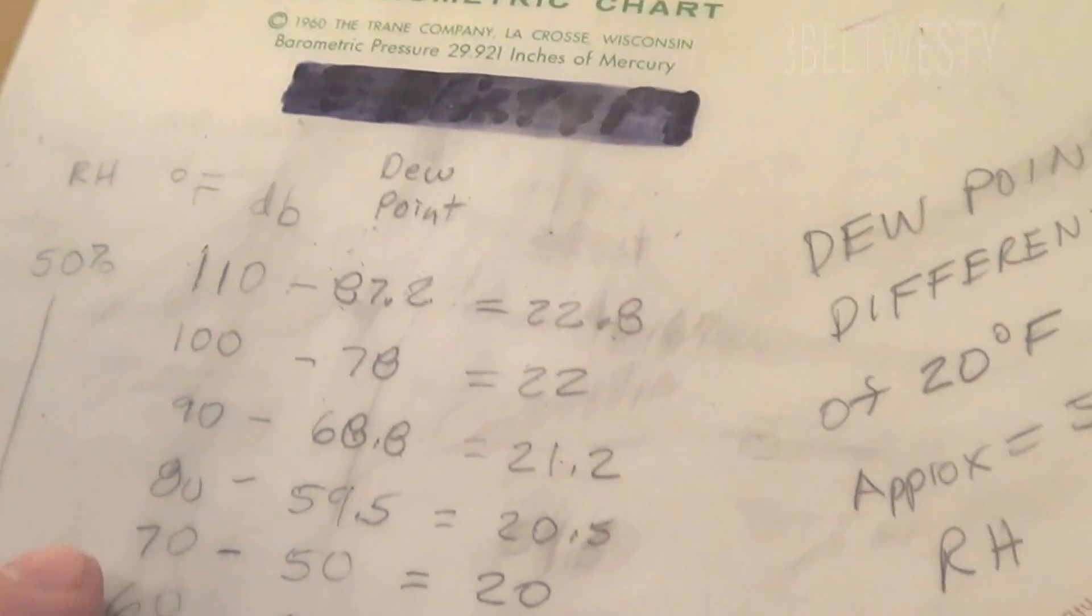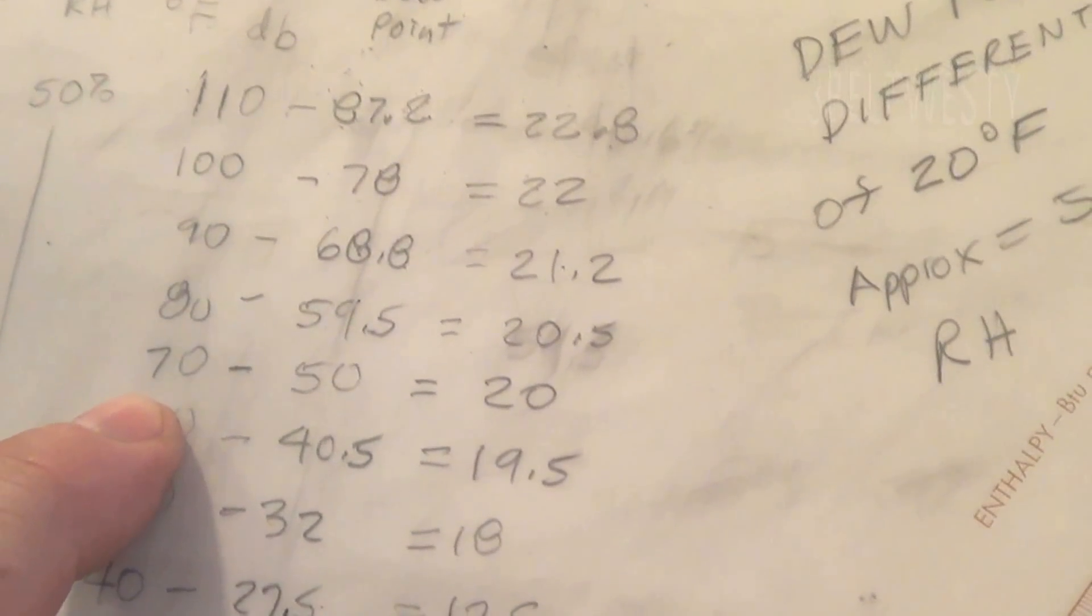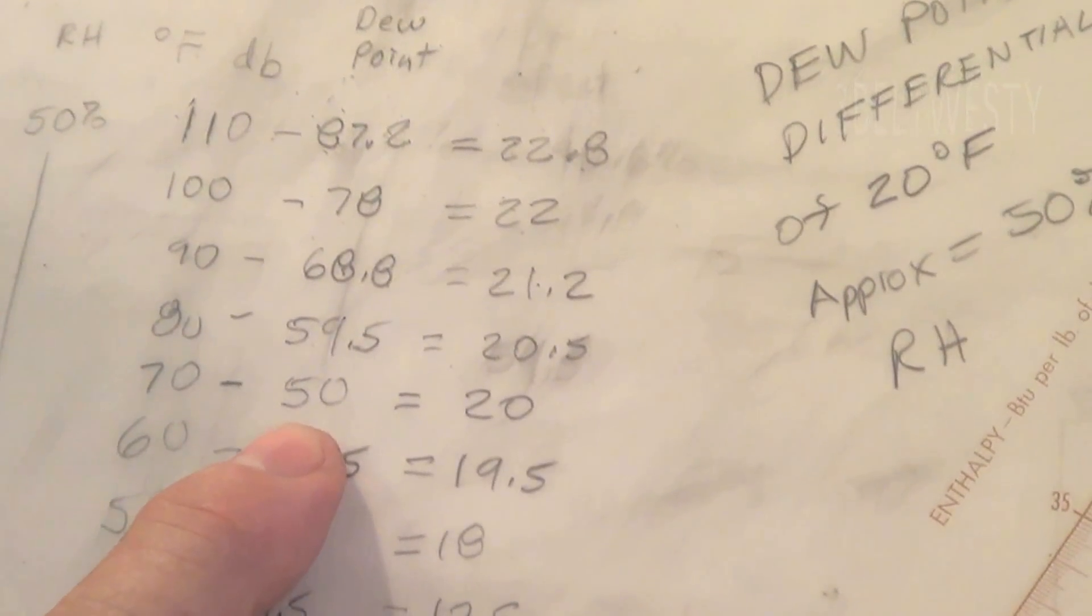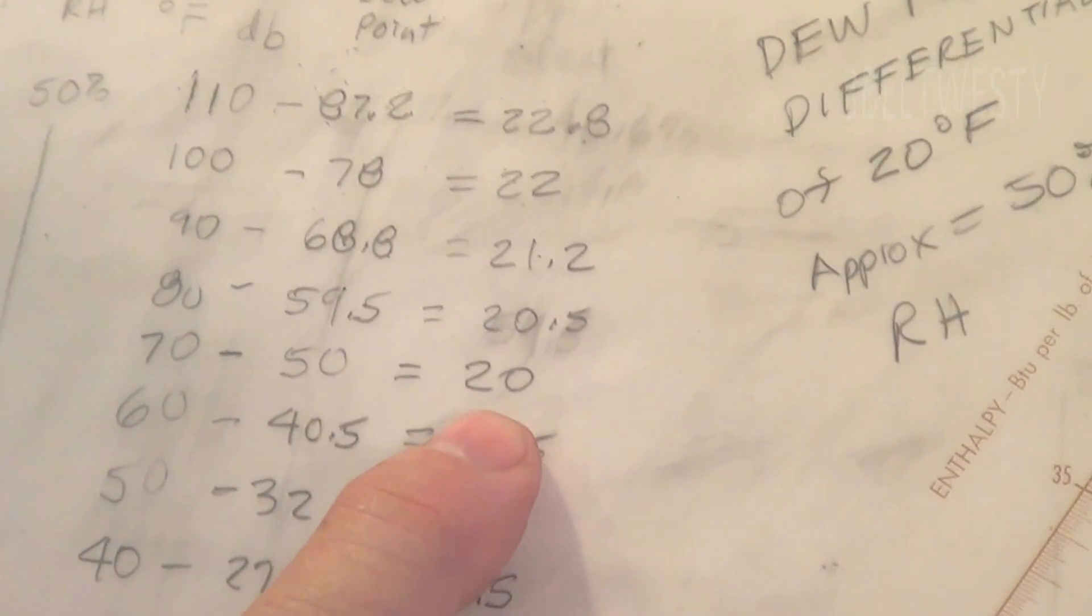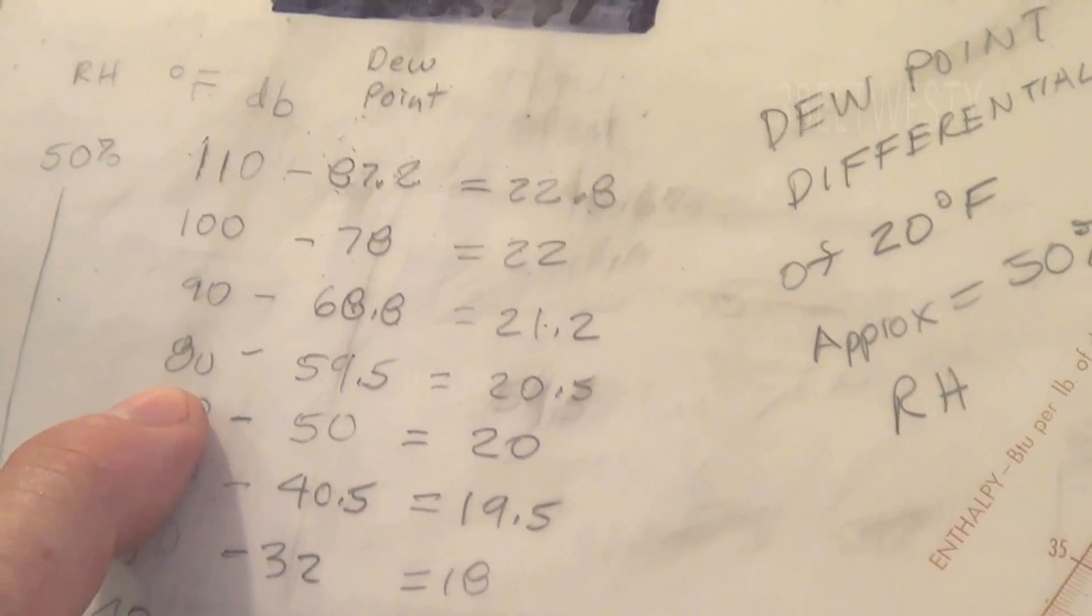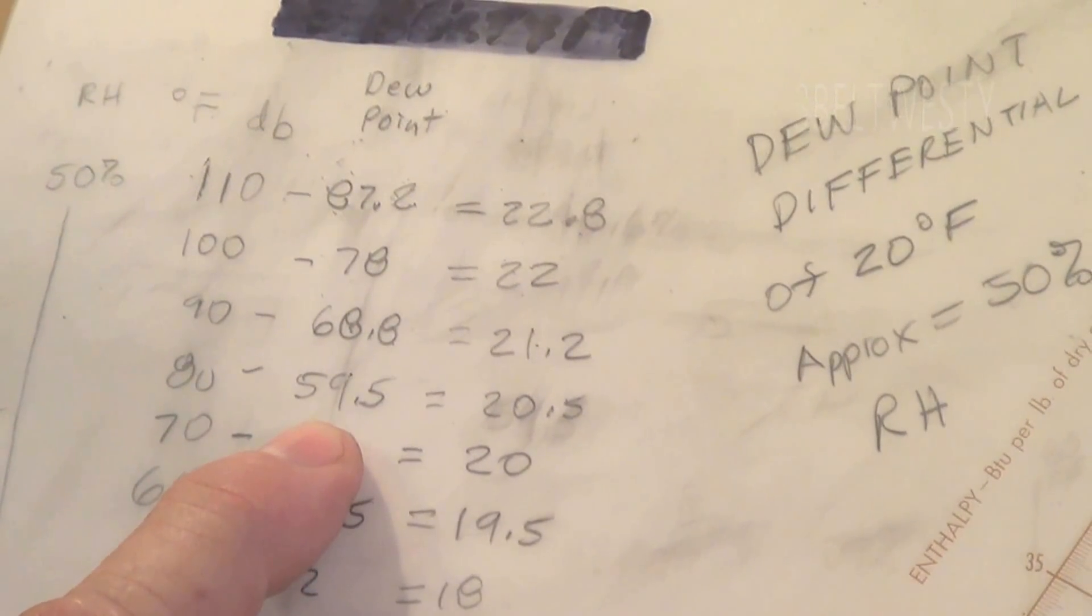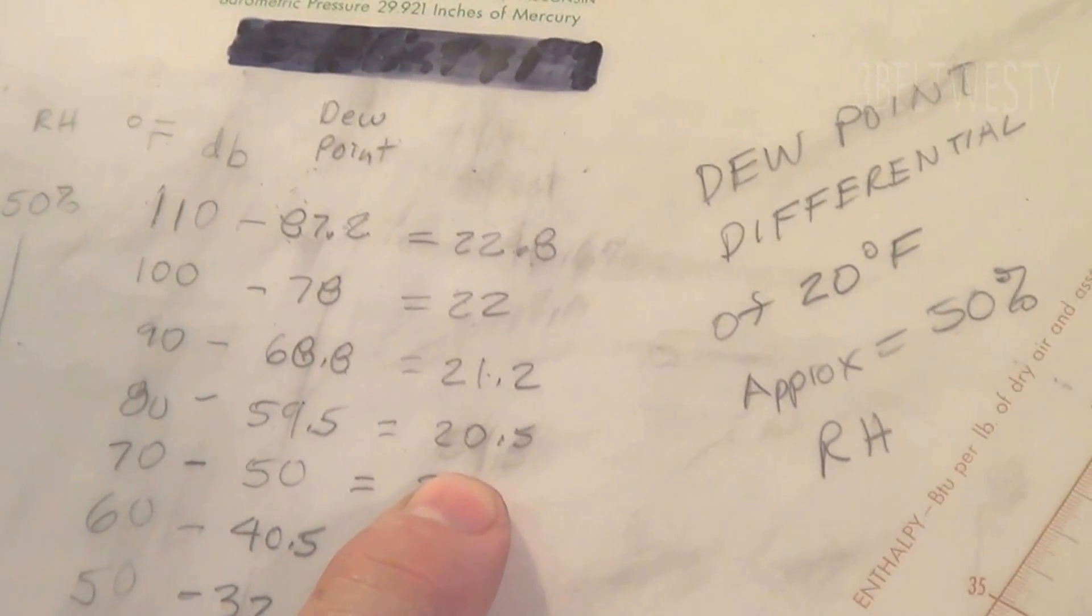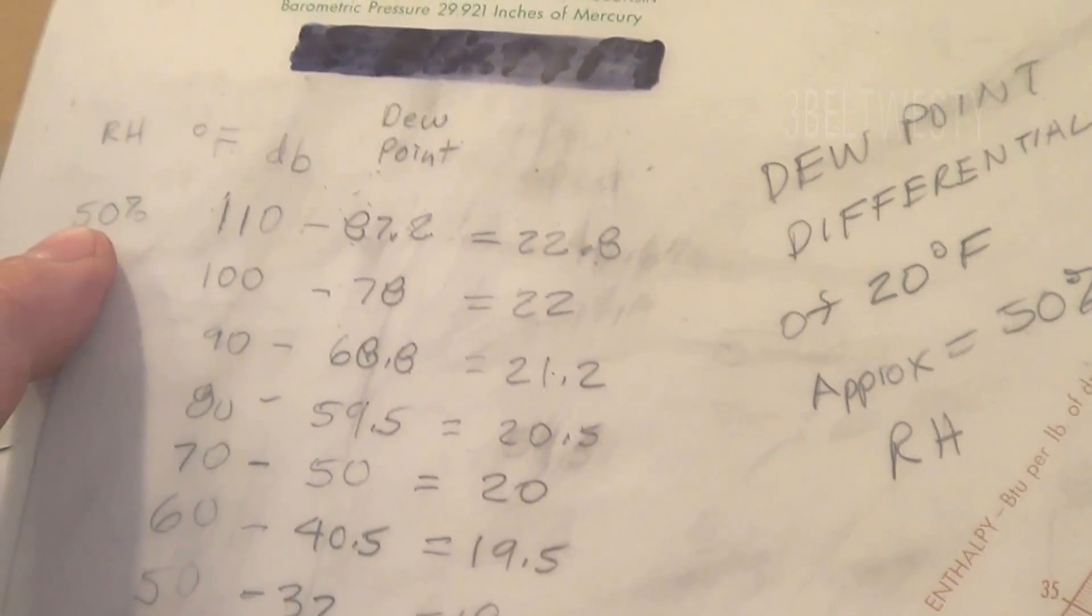Here's the actual error. Take a dry bulb of 70, dew point of 50, it's on the money at 20. You take 80 degrees, dew point of 59 and a half, get 20.5. This is at a 50% RH.